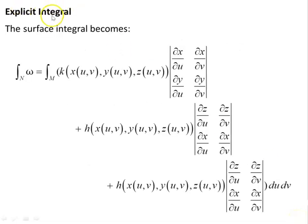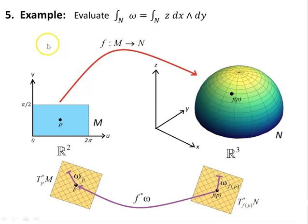Now the explicit surface integral: the integral of omega over N is defined as the integral over M of the pullback F* omega, integrated with respect to u and v. In our example, we want to evaluate the integral of omega over N, where omega equals z dx∧dy. The next couple of slides will be dedicated to that.